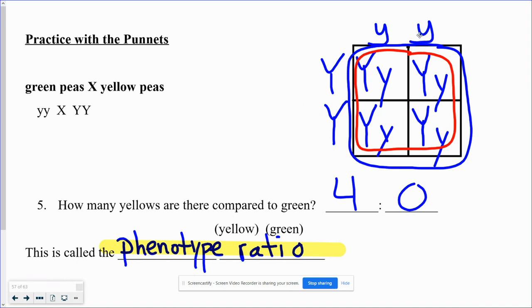green peas, which are also known as homozygous recessive, and these yellow peas with two dominant alleles, so homozygous dominant. When they were crossed together, all four boxes, every single offspring is going to come out with one dominant allele and one recessive allele.